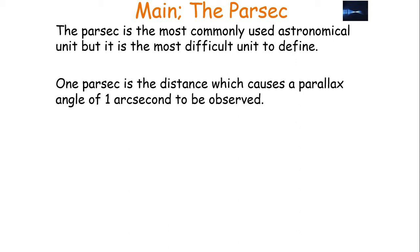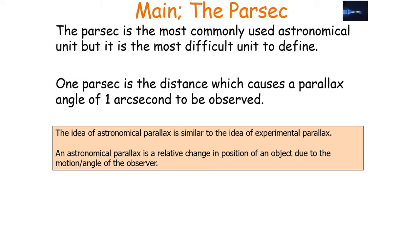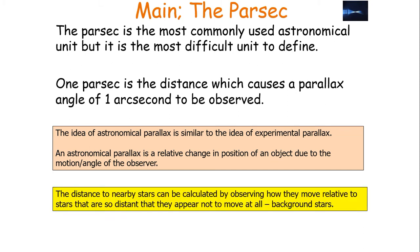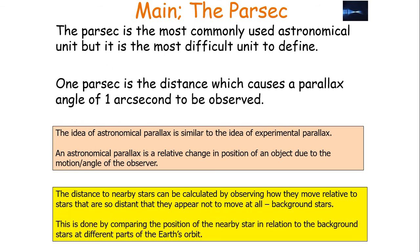The last unit we need to look at is the parsec. The parsec is the most commonly used astronomical unit, but it is also the most difficult unit to define. 1 parsec is the distance which causes a parallax angle of 1 arc second to be observed. The idea of astronomical parallax is similar to the idea of experimental parallax. Astronomical parallax is the relative change in position of an object due to the motion or the angle of the observer. The distance to nearby stars can be calculated by observing how much they move relative to distant background stars, which appear not to move at all. This is done by comparing the position of a nearby star in relation to the background stars at different parts of the Earth's orbit.